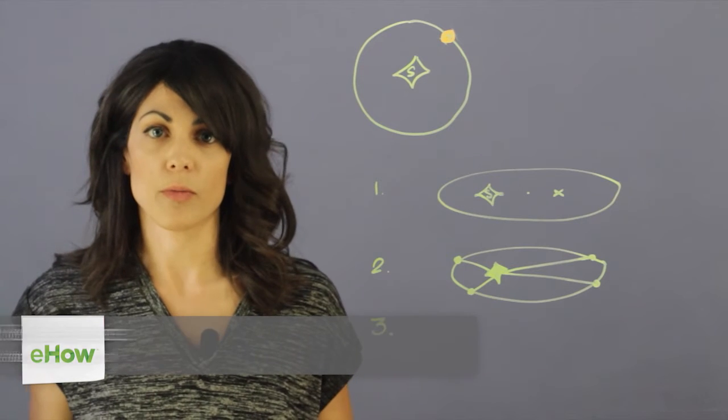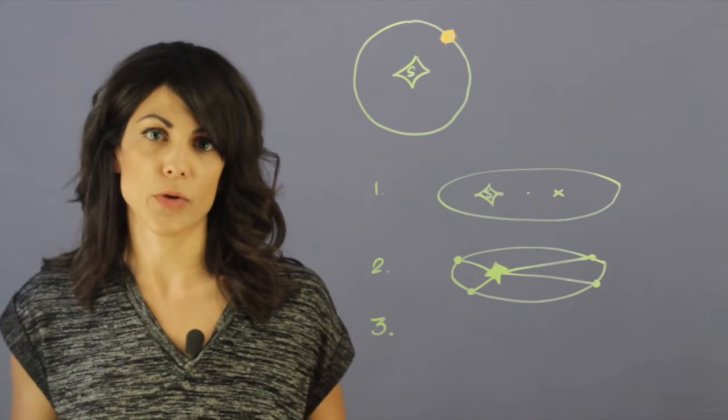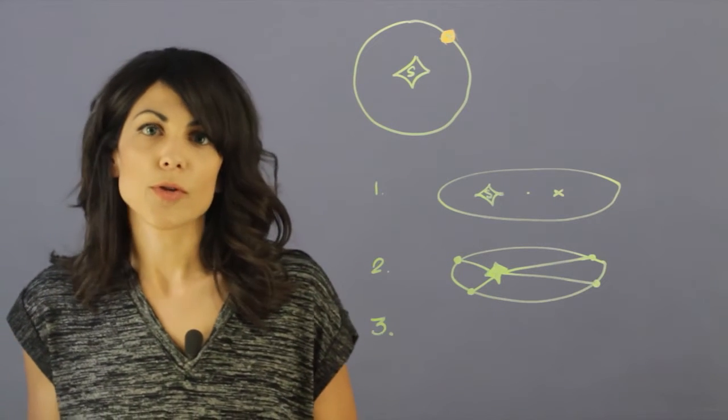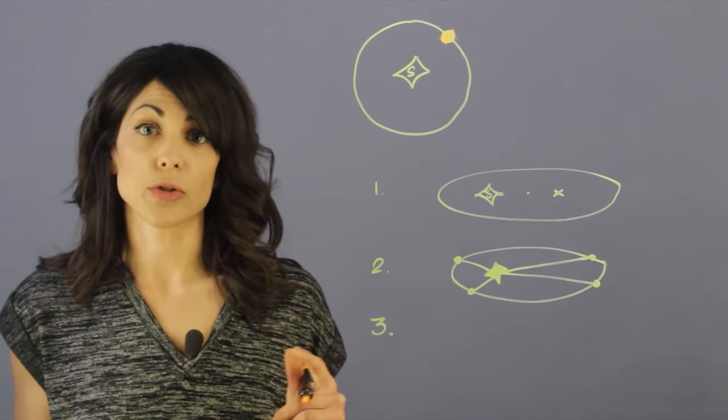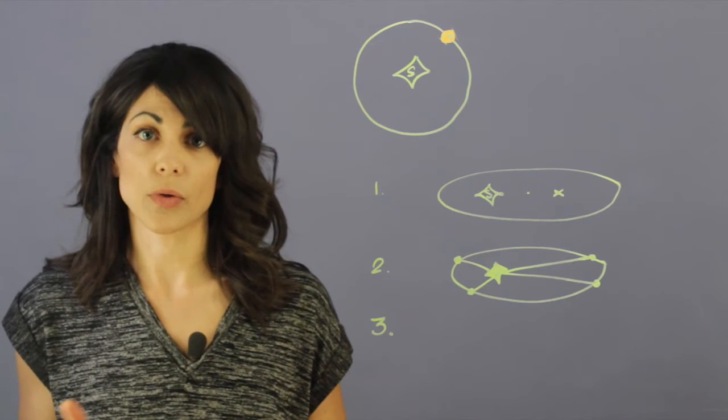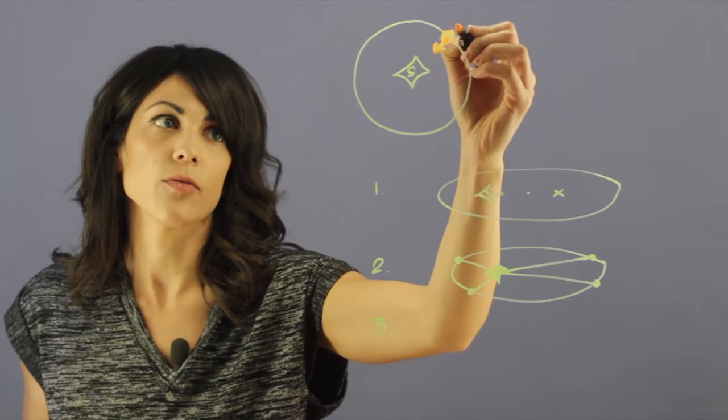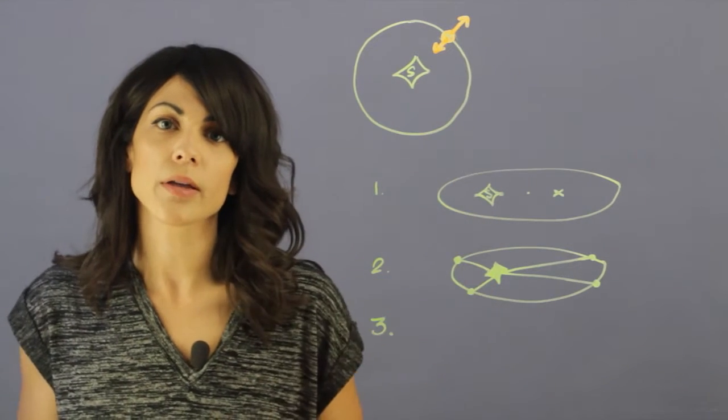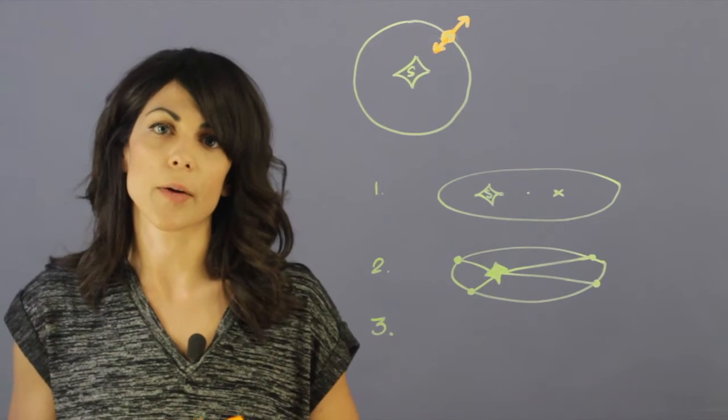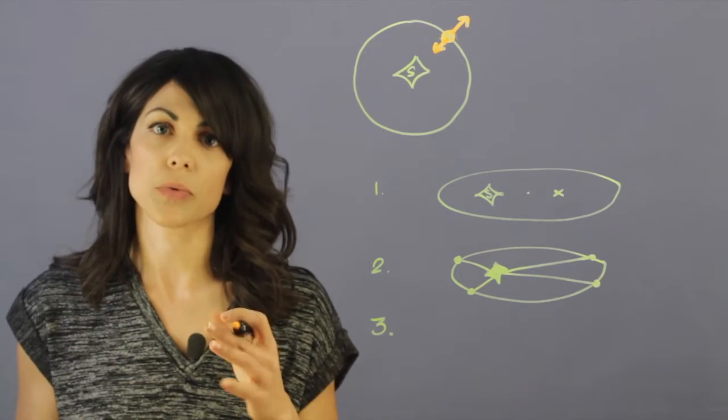So a circular orbit, and I will start from the most simple approximation of an orbit, you need the force, the gravitational force between the two objects to match the centrifugal force. So if you have a force pulling this way and a force pulling that way, you can actually end up balancing the planet stable into an orbit.